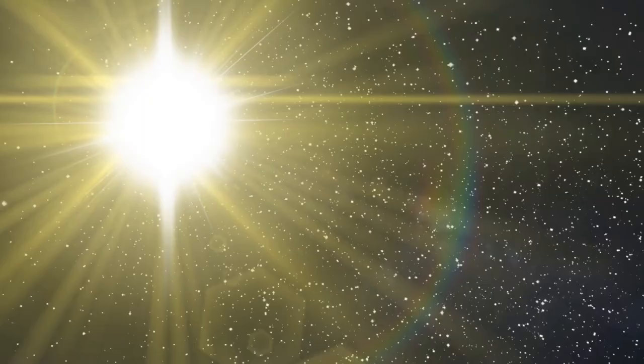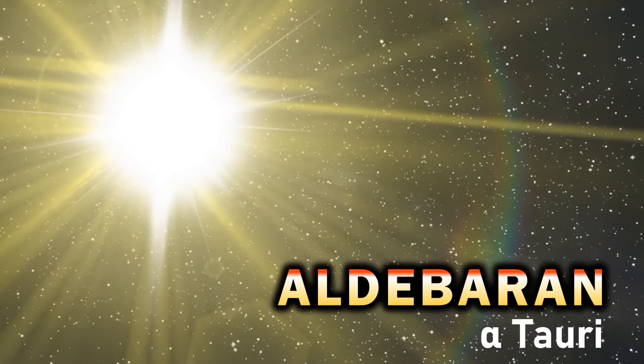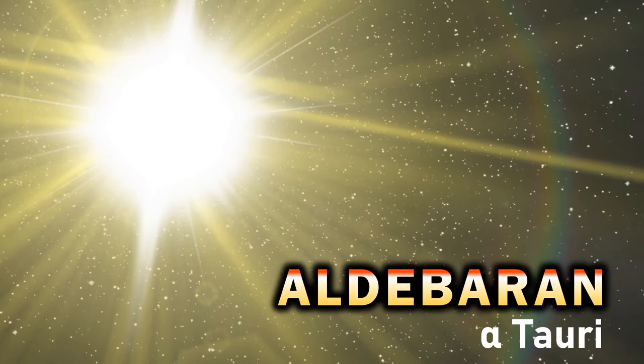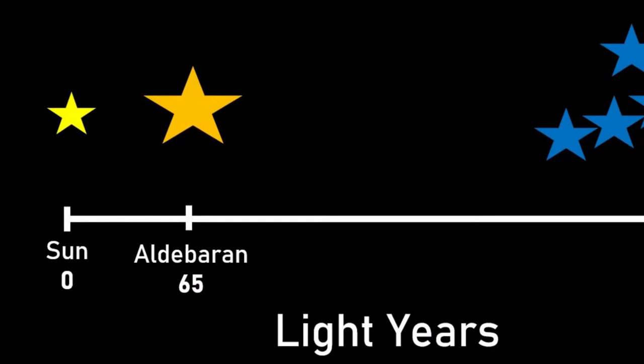Aldebaran itself lies on the right hand side of the winter hexagon, also known of course as Alpha Tauri. It has the nickname of the follower precisely because it follows the Pleiades cluster through the sky. Or at least that's what it appears to do so, but the truth is Aldebaran is a lot closer to us at just 65 light years distance.